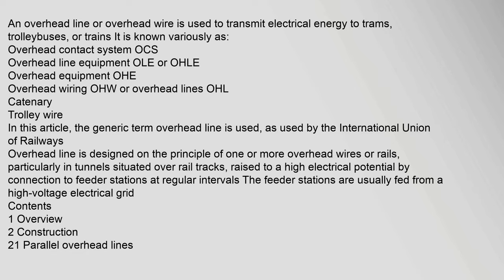An overhead line or overhead wire is used to transmit electrical energy to trams, trolleybuses, or trains. It is known variously as overhead contact system (OCS), overhead line equipment (OLE or OHLE), overhead equipment (OHE), overhead wiring (OHW), or overhead lines. The generic term overhead line is used, as adopted by the International Union of Railways.